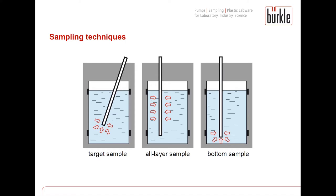An all-layer sample is taken from all layers of the material, giving you a representative cross-section sample of the whole material. This is especially done when the material is heterogeneous and consists of particles of different sizes. Another option to get a representative sample is to spread multiple target samples around the material rather than just one from a specific spot. A bottom sample is taken from the bottom of a container — it is also a target sample since it's taken from a specific predetermined spot.